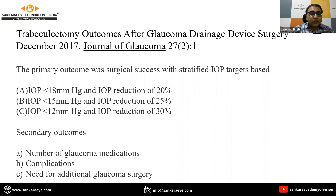Additional success criteria included IOP less than 15 mmHg with more than 25% reduction, and IOP less than 12 mmHg with at least 30% reduction from baseline. Secondary outcomes included number of glaucoma medications, complications, and need for additional glaucoma surgery.